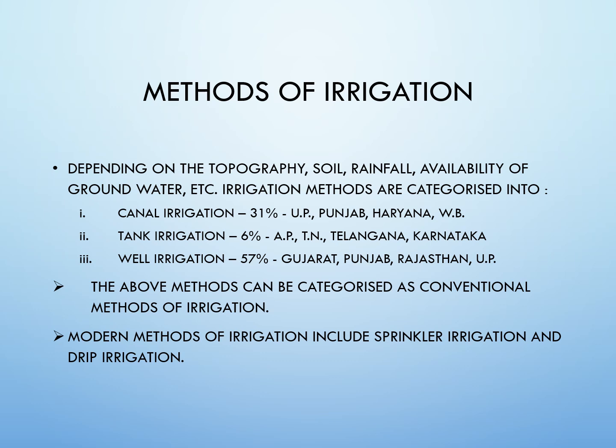Canal irrigation covers around 31% of the total irrigated area; the main states are Uttar Pradesh, Punjab, Haryana, and West Bengal. Tank irrigation covers around 6% of the total irrigated area; the states using it are Andhra Pradesh, Tamil Nadu, Telangana, and Karnataka. Well irrigation is the most popular, covering 57% of the total irrigated area; the states are Gujarat, Punjab, Rajasthan, and Uttar Pradesh. These are conventional methods of irrigation. Modern methods include sprinkler irrigation and drip irrigation.